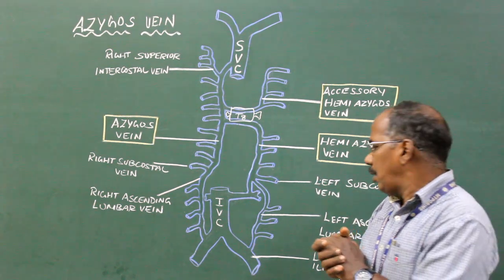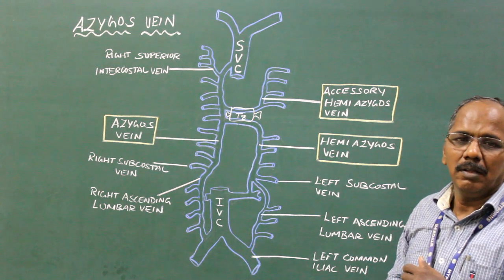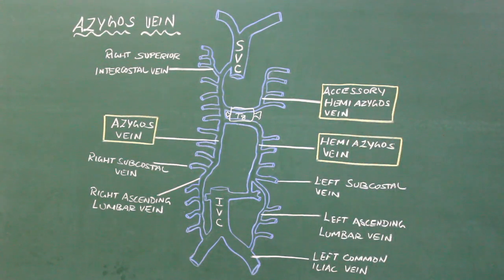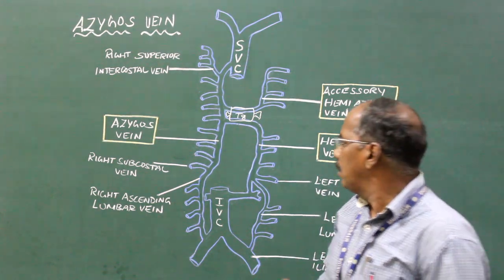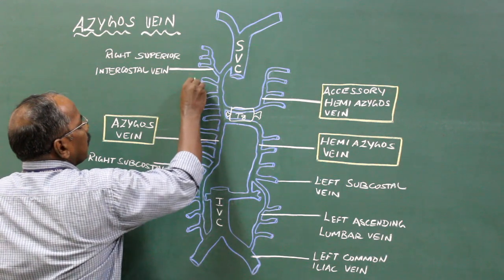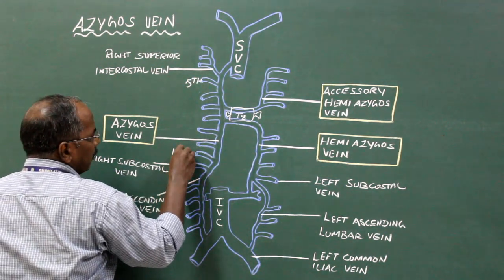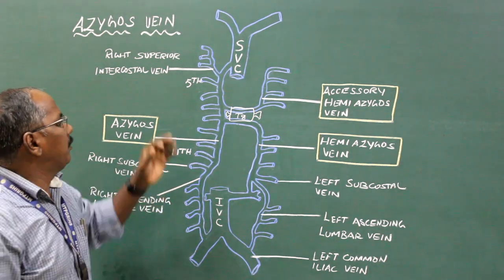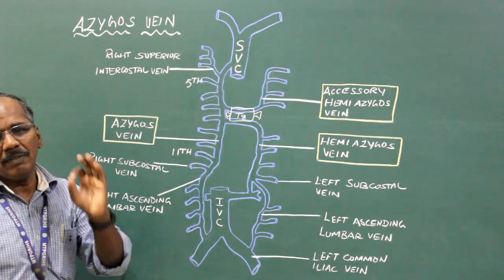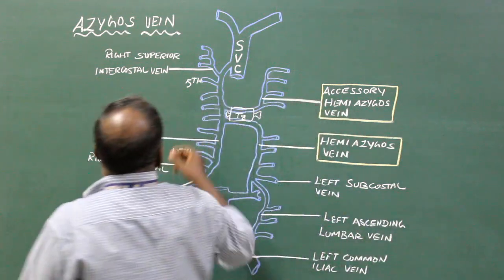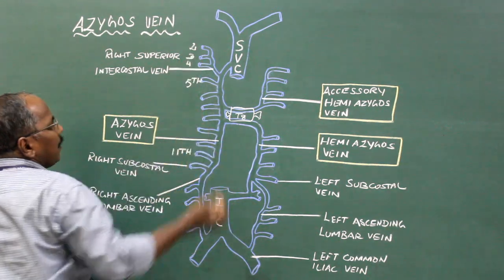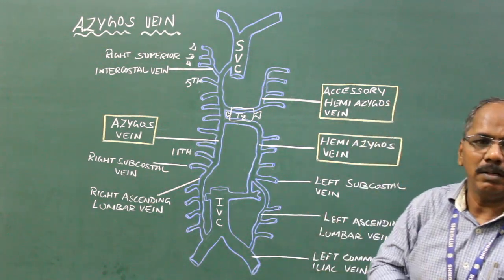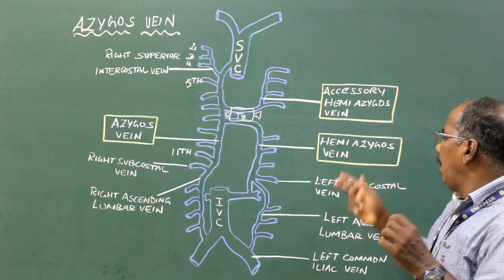Tributaries of the azygous vein: Number 1, right subcostal vein. Number 2, right ascending lumbar vein. Number 3, 5th to 11th right posterior intercostal veins. Number 4, right superior intercostal vein, which is in turn formed by the 2nd, 3rd, and 4th right posterior intercostal veins.